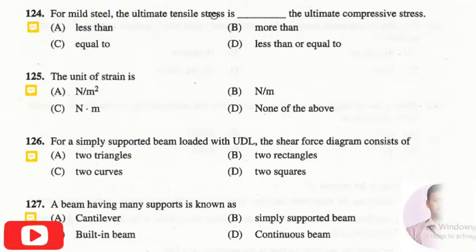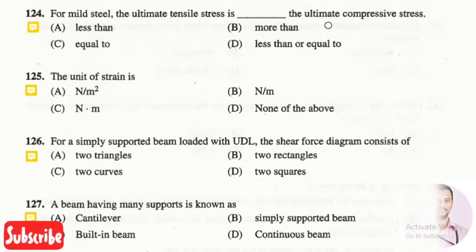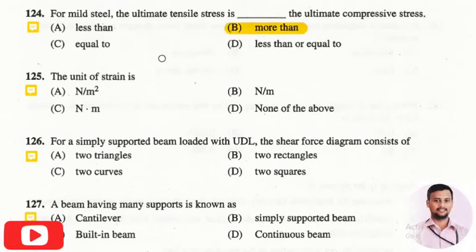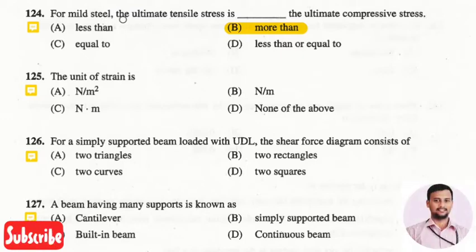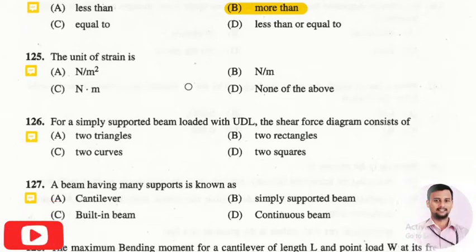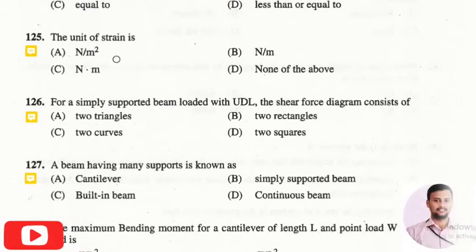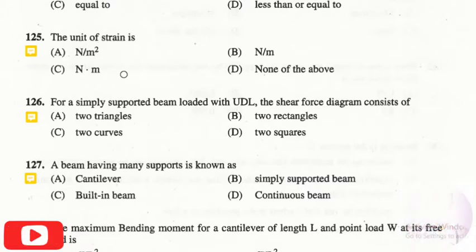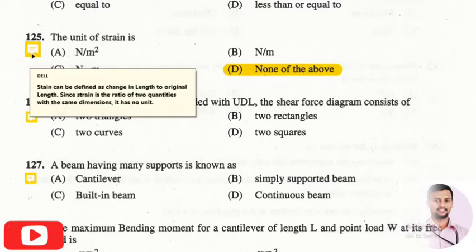The next question is: for a mild steel, the ultimate tensile stress is compared to the ultimate compressive stress? The right answer is option two — more than. For a mild steel, the ultimate tensile stress is more than the ultimate compressive stress.